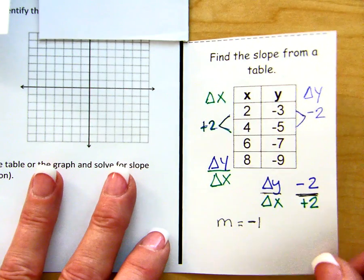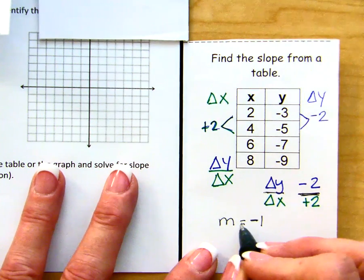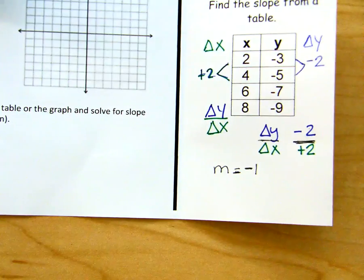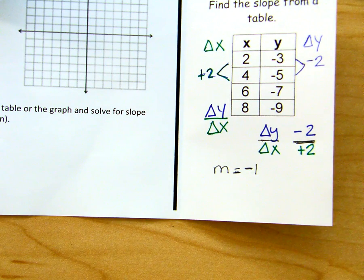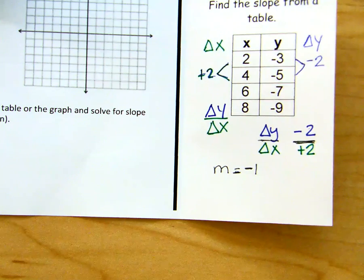So you can either look at what the change is and get your ratio from that, get your rate of change, which is also what we call slope, and find it from the table that way. So you have multiple options when you are given a table.